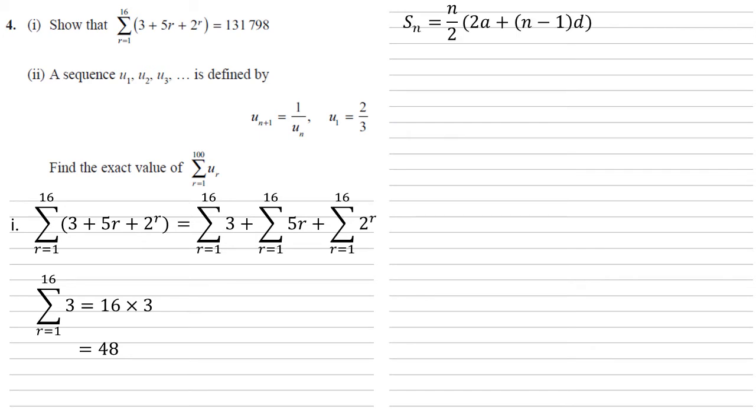We can use our sum for arithmetic sequences formula with n equals 16 because there are 16 terms. n over 2 times 2 times 5 plus 16 minus 1 times 5 equal to 8 times 85, which is 680.